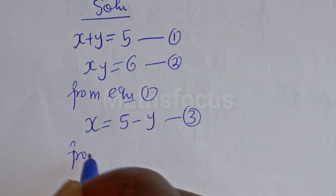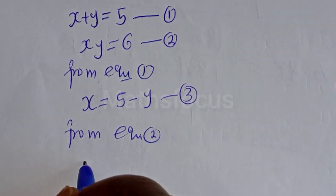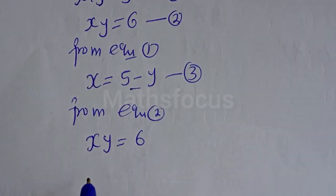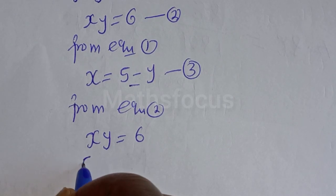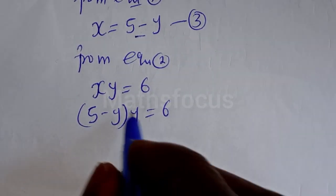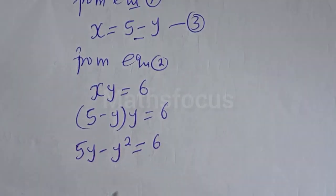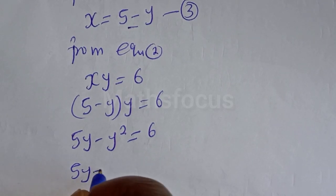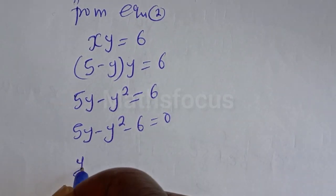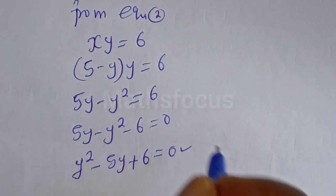From equation 2, X times Y is equal to 6. Then when X is substituted, we have (5 minus Y) times Y is equal to 6. Let's open the bracket: 5Y minus Y squared is equal to 6, so 5Y minus Y squared minus 6 is equal to 0. Rearranging, Y squared minus 5Y plus 6 is equal to 0. This is a quadratic equation.